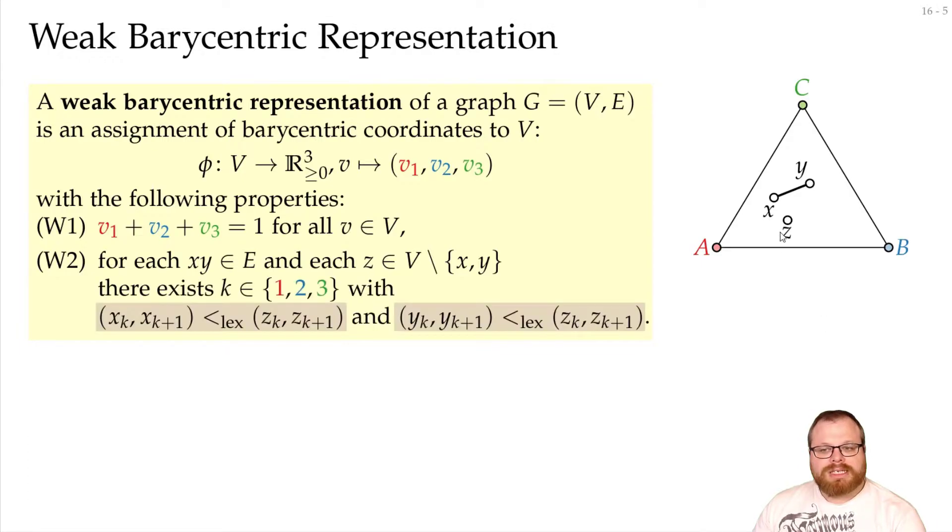Now we want z to be lexicographically larger for k and k plus 1 than both of them. What does that mean? That means that either z_k is larger than y_k, or they are exactly the same, but then z_{k+1} must be larger than y_{k+1}.